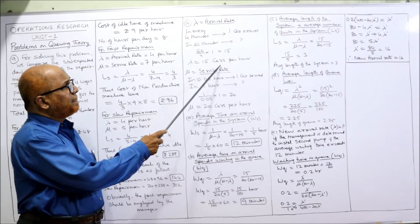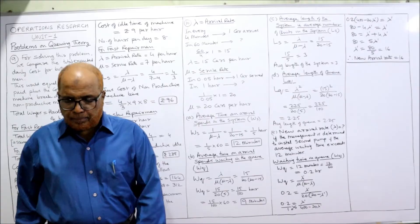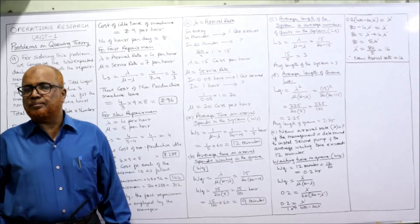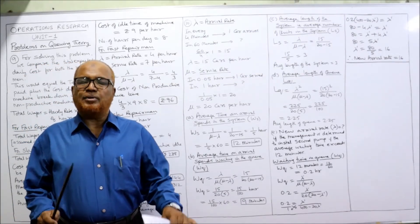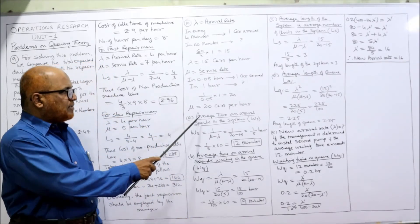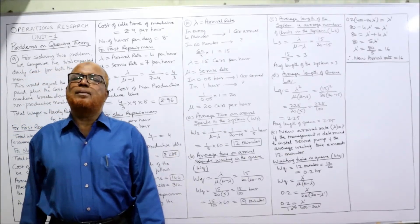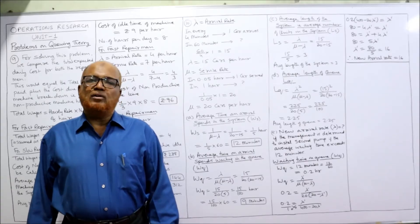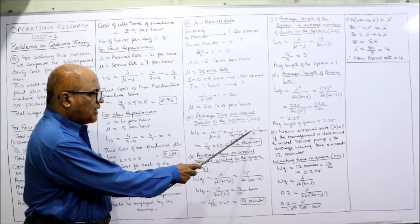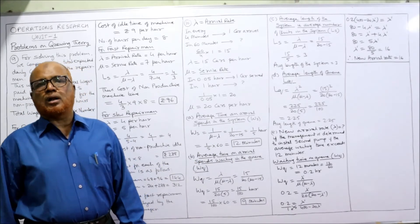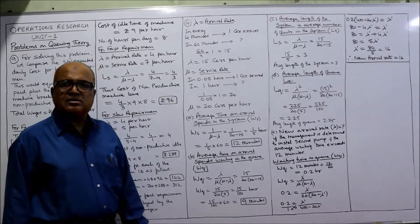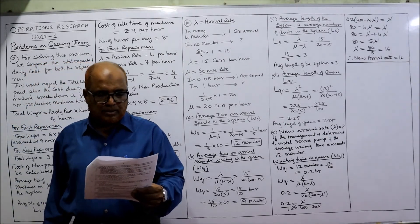We have lambda equals 15 and mu equals 20. The first question asks for the average time an arrival spends in the whole system. The formula is Ws equals one divided by mu minus lambda, which is one divided by 20 minus 15, equals one-fifth hour or 0.2 hours. In minutes: one-fifth times 60 equals 12 minutes.